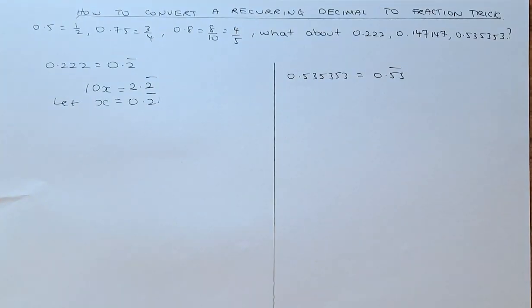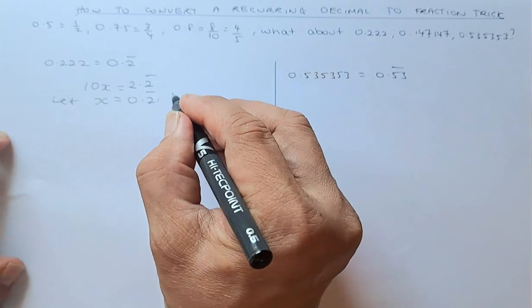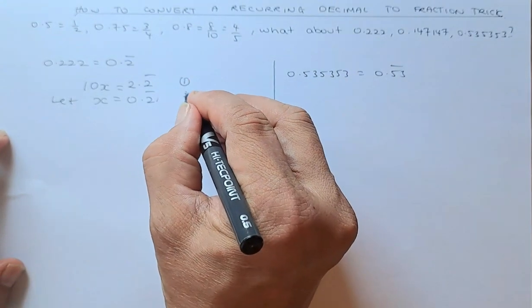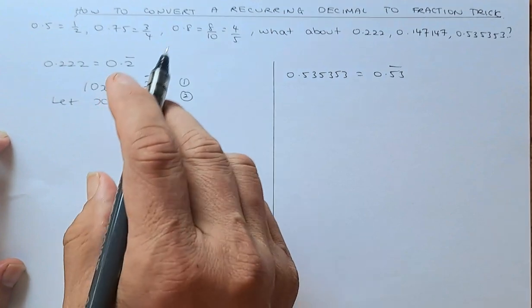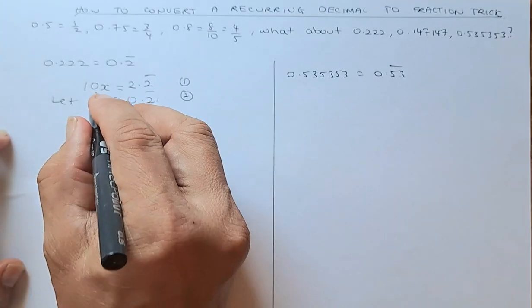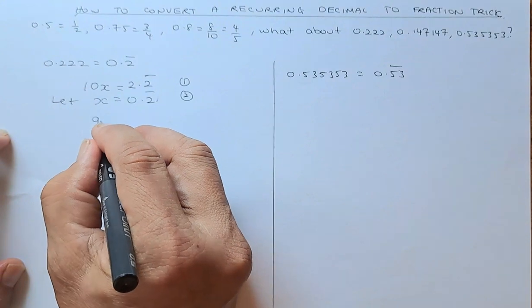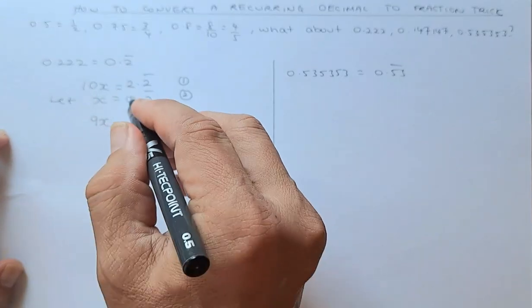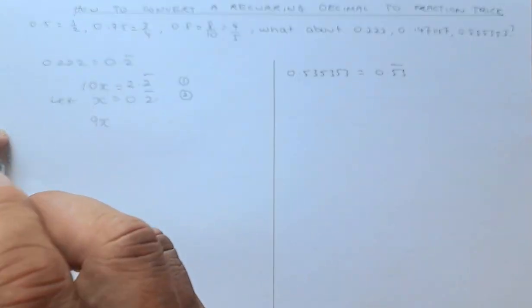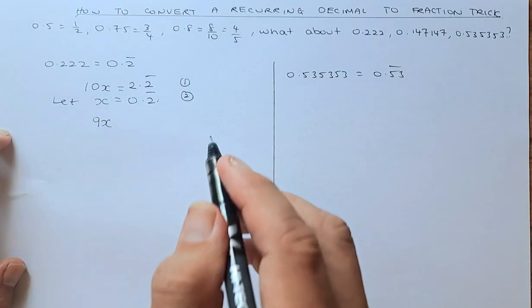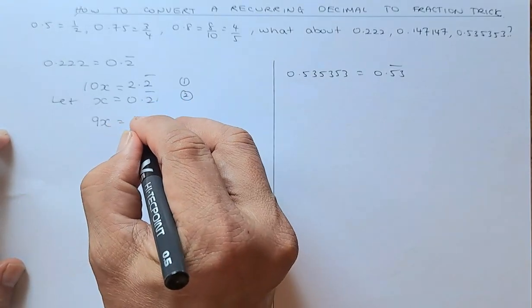So now, if we take equation 1 and that's equation 2, if we minus equation 1 and minus it with equation 2, 10x minus x, that will leave you with 9x. 2.2 recurring, take away 0.2 recurring, the answer is going to be 2.